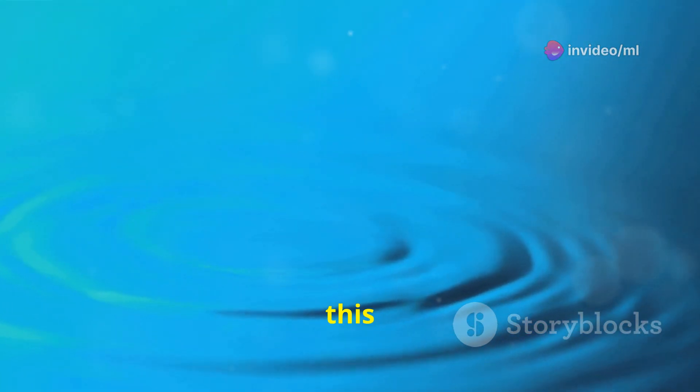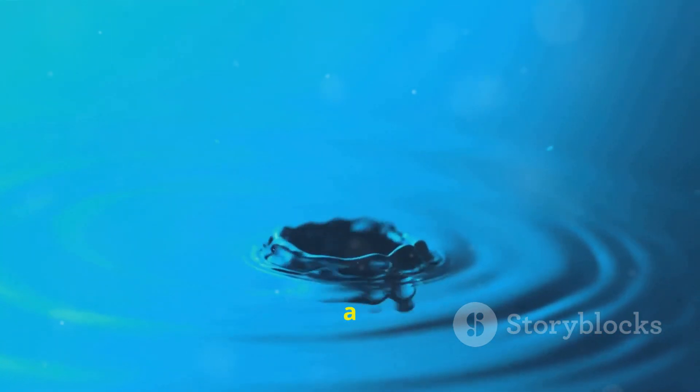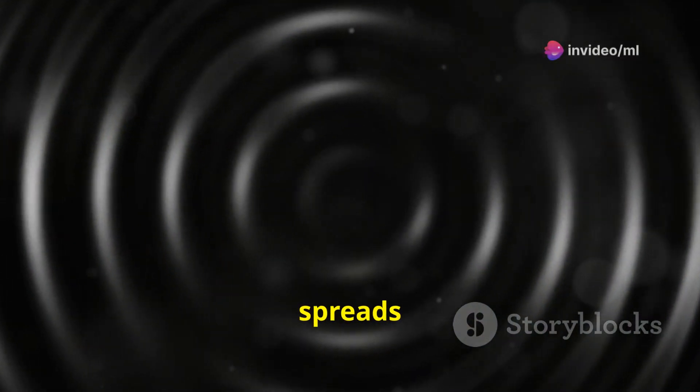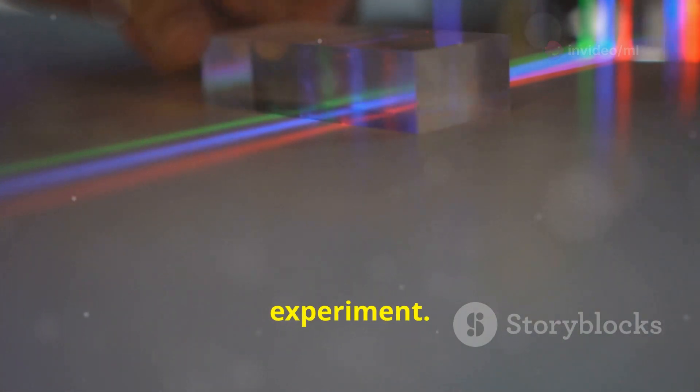Think of it like this. Imagine a water wave passing through a narrow opening in a barrier. The wave doesn't just continue in a straight line. Instead, it spreads out, or diffracts, as it passes through the opening. The same thing happens with light waves in the double slit experiment.